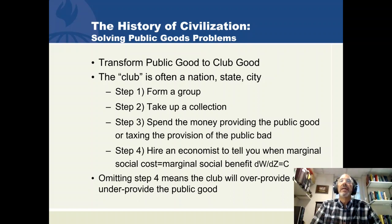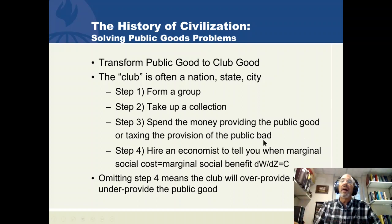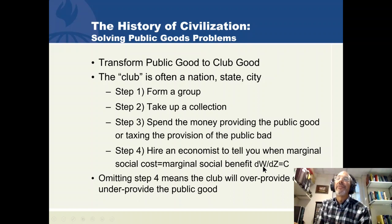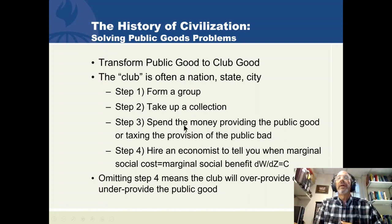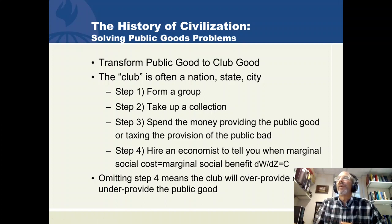Step four is the guidance step. Ideally, these clubs would hire an economist to identify the point at which marginal social cost equals marginal social benefit. The economist would measure the W function — all of those utilities and their sum — and form a model of dW/dZ to tell the people in this club the right amount of social good to produce. If you don't get to step four, the club is probably going to overdo it or underdo it. Ideally, they will find a way to measure the right amount of social benefit and provide it relative to cost.